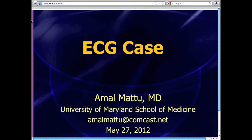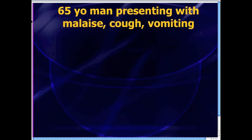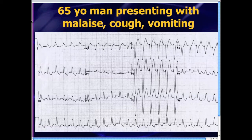Greetings everyone, and welcome to the EKG case for the week of May 27, 2012. Let's jump right into the case. This is a 65-year-old man that presented to the emergency department looking pretty sick. He had complaints of cough and vomiting, and he looked pretty worn out — complaining of fatigue and malaise as well. Anybody who's elderly presenting with malaise, we're always getting a quick 12-lead EKG. At triage, he happened to be tachycardic, so that's another good reason to check the 12-lead, and this is what we end up finding.